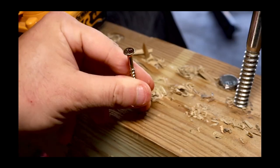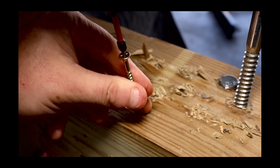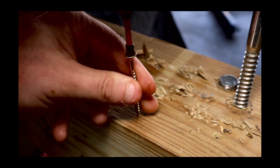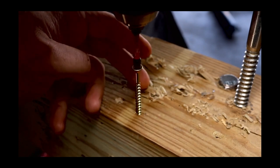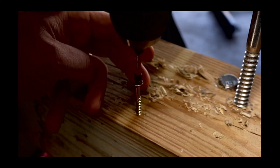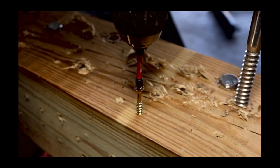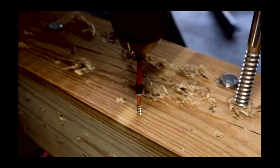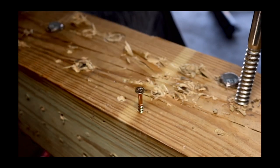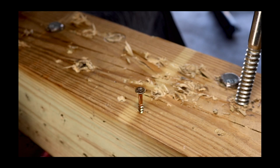So here is the dreaded Phillips, the one that loves to strip out on us every single time that you use one. Now, this is a general purpose contractor screw. There's nothing special about it. There's no special metals that were formulated to make this screw, so it should work pretty well.